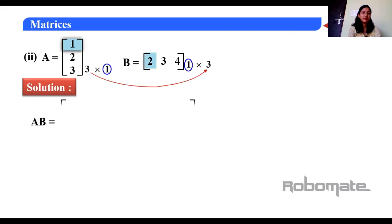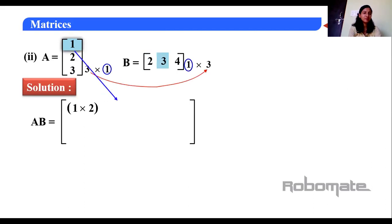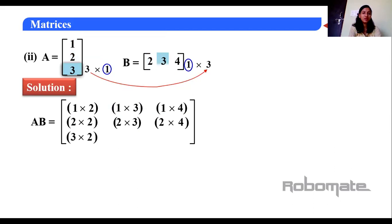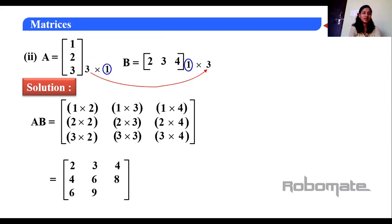Now we multiply: first row by first column, first row by second column, first row by third column. Then second row by first column: 2×2; second row by second column: 2×3; second row by third column. Then third row: 3×2, 3×3, 3×4. The result A·B equals the matrix: 2, 3, 4 / 4, 6, 8 / 6, 9, 12. The order is 3×3.